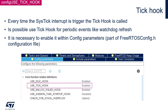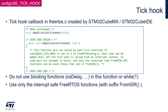Another type of hook is the tick hook. It can be enabled by defining configUSE_TICK_HOOK within FreeRTOSConfig.h. Once enabled, it is called every time the SysTick interrupt is triggered. It can be used for periodic events like watchdog refresh, but be careful — the SysTick has the lowest possible priority and the OS may be frozen temporarily, preventing the watchdog from being refreshed on time. The hook callback must not contain any blocking functions or endless loops. When using FreeRTOS API, use only interrupt-safe functions with the FromISR suffix.